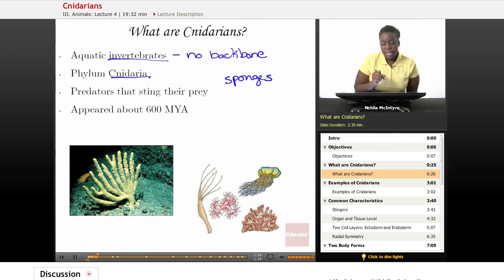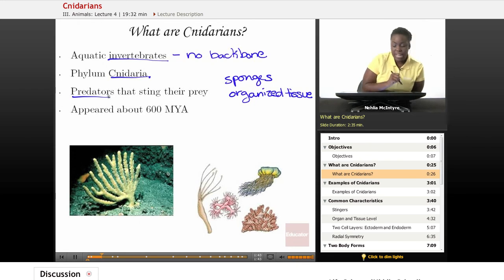And that's because Cnidarians actually have organized tissue, unlike the sponges. And some of that tissue is actually used to protect the Cnidarians and also to help them hunt for food. So Cnidarians would be considered predators because they have this type of cell tissue that is a stinging type of cell tissue, and that cell tissue is able to sting their prey or their food source in order for them to survive.